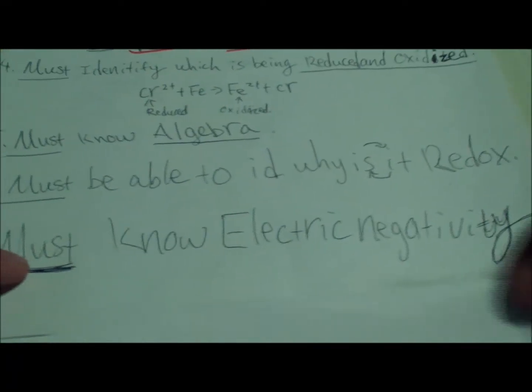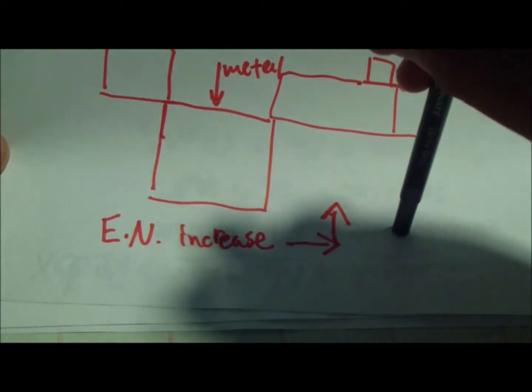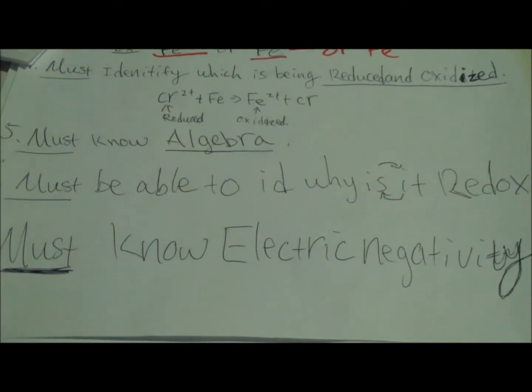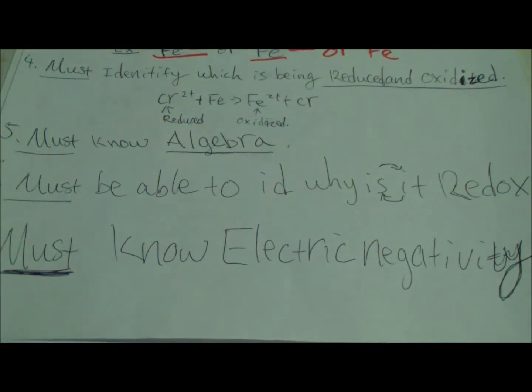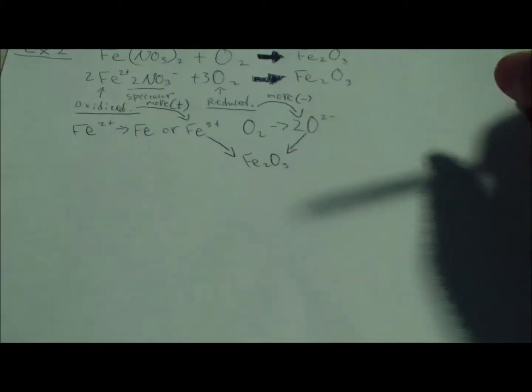Let's now talk about number seven, electronegativity. Electronegativity increases to the right and up. Electronegativity means how much do the ions want their electrons, or how hard is it to take away electrons?